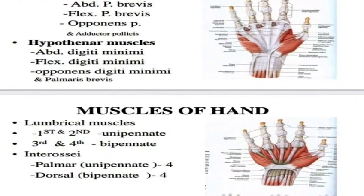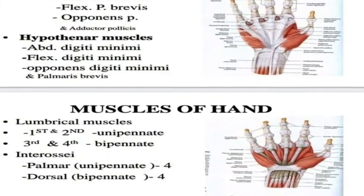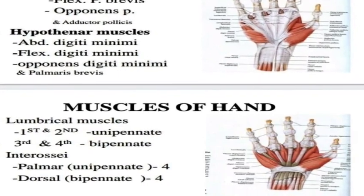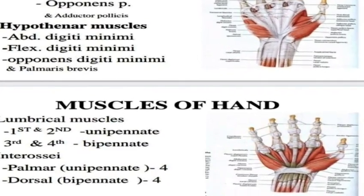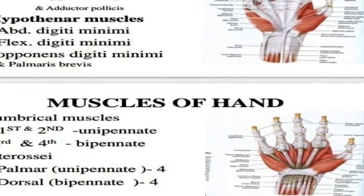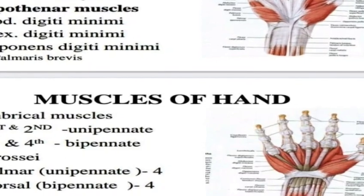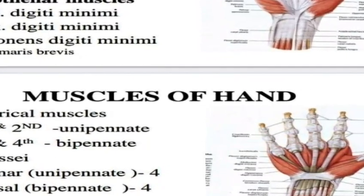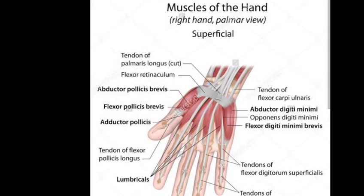Muscles of the hand: thenar muscles are responsible for precision movements and small motor units. Thenar muscles include abductor pollicis brevis, flexor pollicis brevis, and opponens pollicis. Hypothenar muscles act on the little finger.